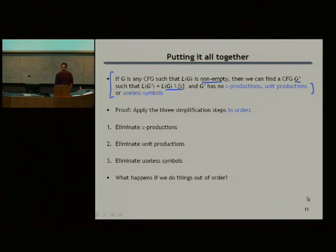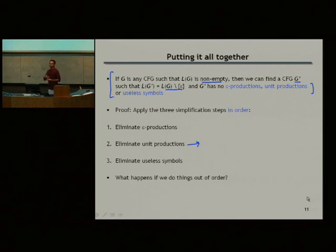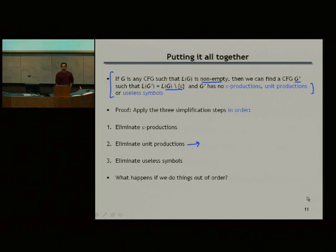It boils down to the first concern: if we eliminate useless symbols in the first step and then eliminate unit productions, that's going to generate more useless symbols — exactly as we saw earlier in the lecture. It's possible that when you eliminate a unit production, you actually produce some useless symbols. So that's one concern.